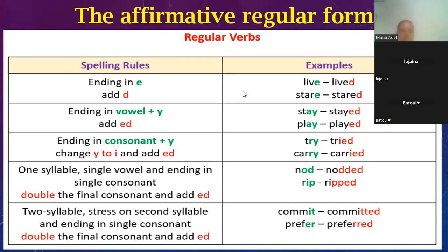For the regular verb: to turn a verb into the past simple, the first rule is if the verb ends with the letter E, we just add D — just D. Normally we add ED, but if the verb ends with E, just add D. The next rule: if the verb ends with a vowel then the letter Y, don't remove the Y, just add ED as usual.